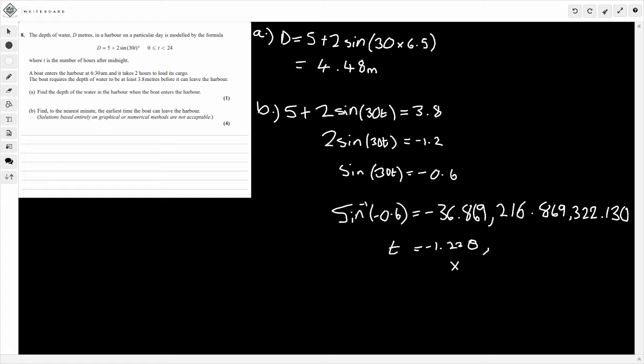So 216.869 divided by 30, that's going to give me 7.228. So that looks good so far. Let's just put this last one out just to be sure. So 322.130 divided by 30, that's going to give me 10.771.